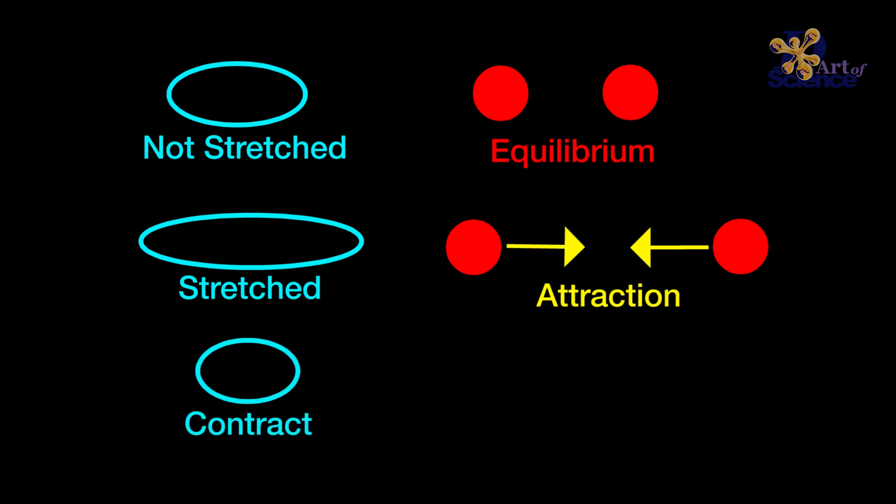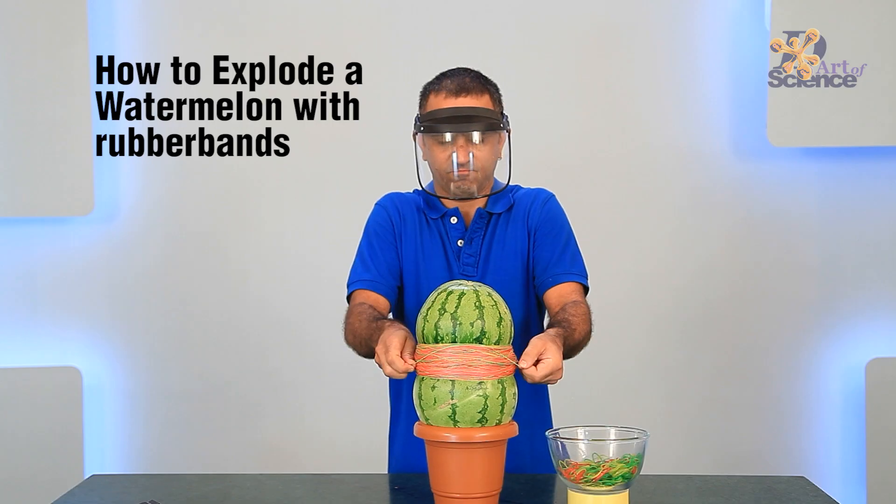On the other hand, when we contract the rubber band, the atoms repel each other and once again want to go back to the state of equilibrium.